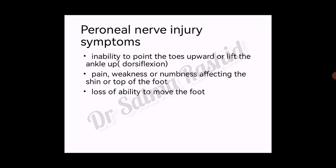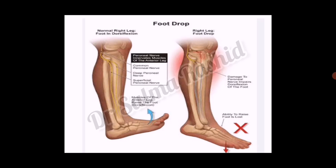Peroneal nerve injury symptoms include inability to point the toes upward or lift the ankle up — dorsiflexion is affected — along with pain, weakness, or numbness affecting the shin or top of the foot, and loss of ability to move the foot. In the picture, the left side shows a normal right leg foot in dorsiflexion; the muscles of the anterior leg raise the foot. The right side shows foot drop, where damage to the peroneal nerve impairs dorsiflexion and the ability to raise the foot is lost.